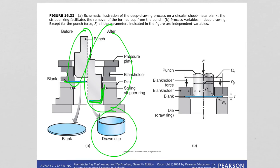Some of the key parameters in deep drawing include blank diameter D₀, punch diameter D_p, clearance C between the punch and die, punch corner radius R_p, die corner radius R_d, and the force and friction that can exist in the contacting surfaces. All those parameters affect the process.